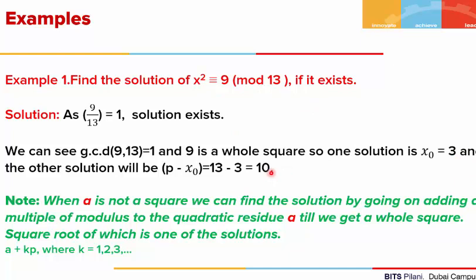If we ever have a doubt whether the solutions we found are correct, we can always substitute them into the congruence to verify. If X₀ = 3, then 3 squared is 9, and 9 is congruent to 9 mod 13 — satisfied. For X₀ = 10, 10 squared is 100; 100 minus 9 is 91, and 91 is divisible by 13. So this solution also satisfies the congruence.